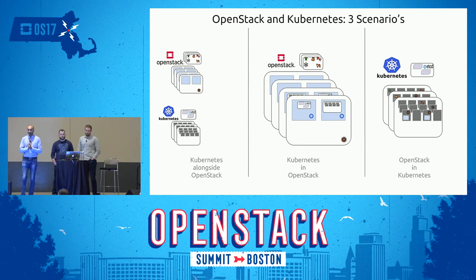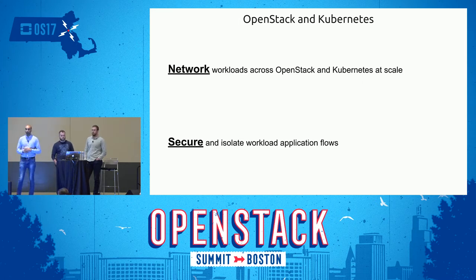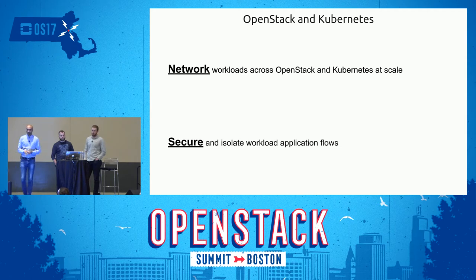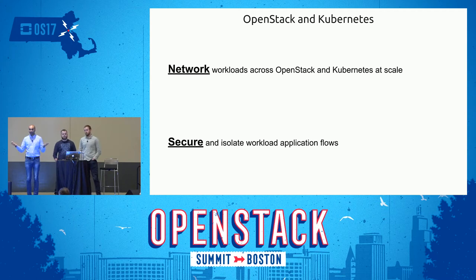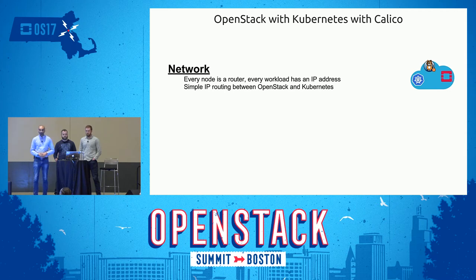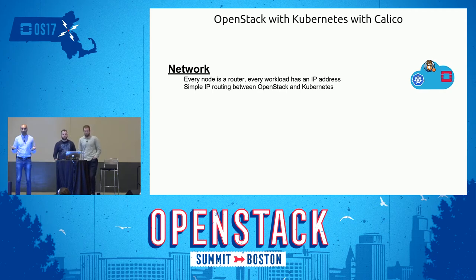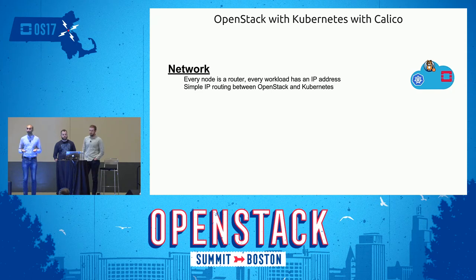Coming to the scenarios of deploying OpenStack side-by-side with Kubernetes or one on top of the other, there are two things to consider with Calico. First, how do you network workloads — connecting workloads in Kubernetes with workloads in OpenStack? Because networking is simple IP routing, every workload has an IP address. You can peer across them using BGP or use your infrastructure. It doesn't matter whether clusters are in the same data center or on the other side of the planet — it's simple IP.